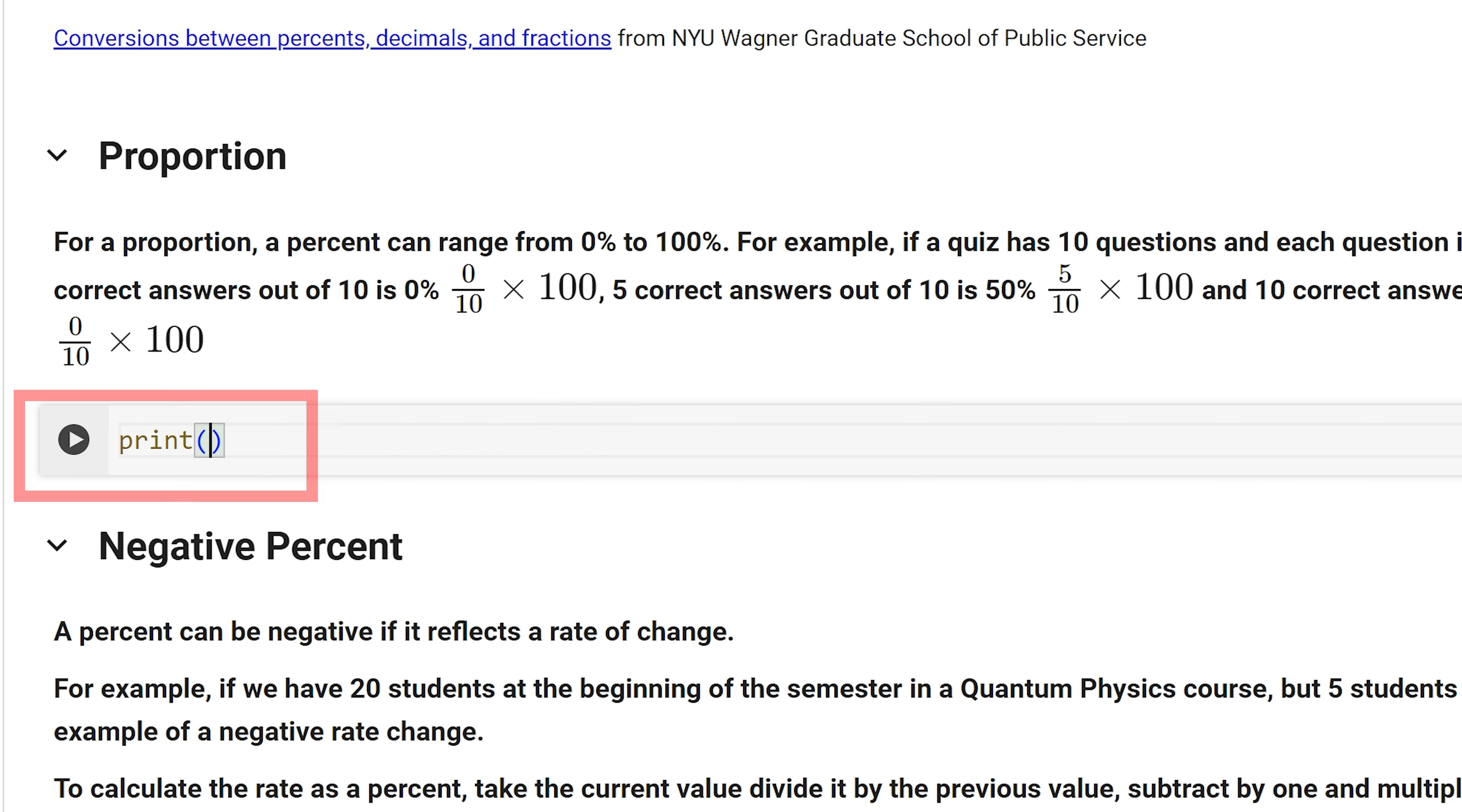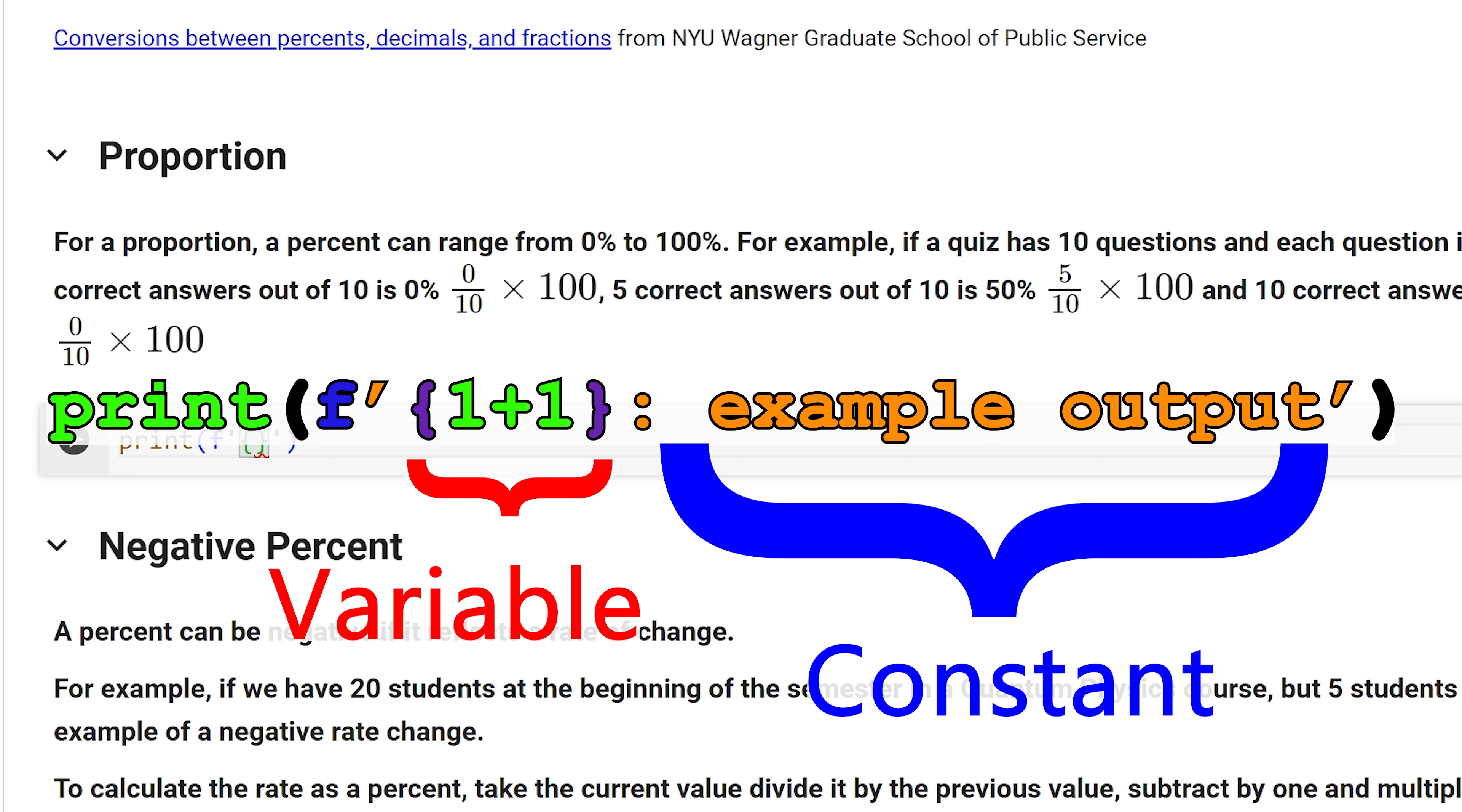First, I am going to call on the print function. The print function will allow us to print out our calculation. Within the print function, we are going to print out the calculation using f-strings. An f-string is started by typing f at the beginning of single or double quotations. Then within the curly braces, we put in the calculation.